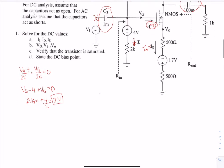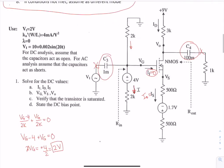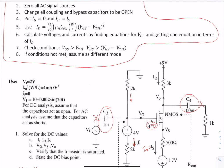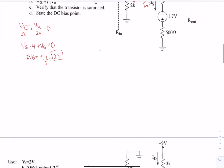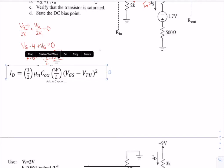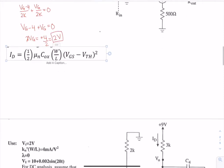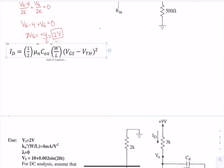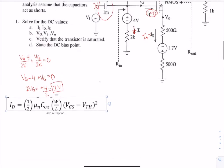So next we need to write the ID equation. We want to put it in terms of ID. So we need to write VGS in terms of ID, which means we need the VS equation to be written in terms of ID.